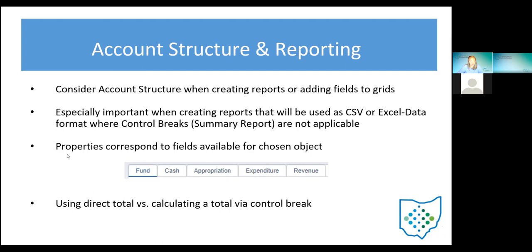Properties correspond to the fields available for the chosen object. When we go in and look at these fields on the account page, the fields there connect to what you're pulling when you go to actually edit that report definition — basically just like what Pat showed with the projects. You have those fields on the project page for project-to-date and the legacy project-to-date. When you're adding those to reports, it's coming directly from that field.